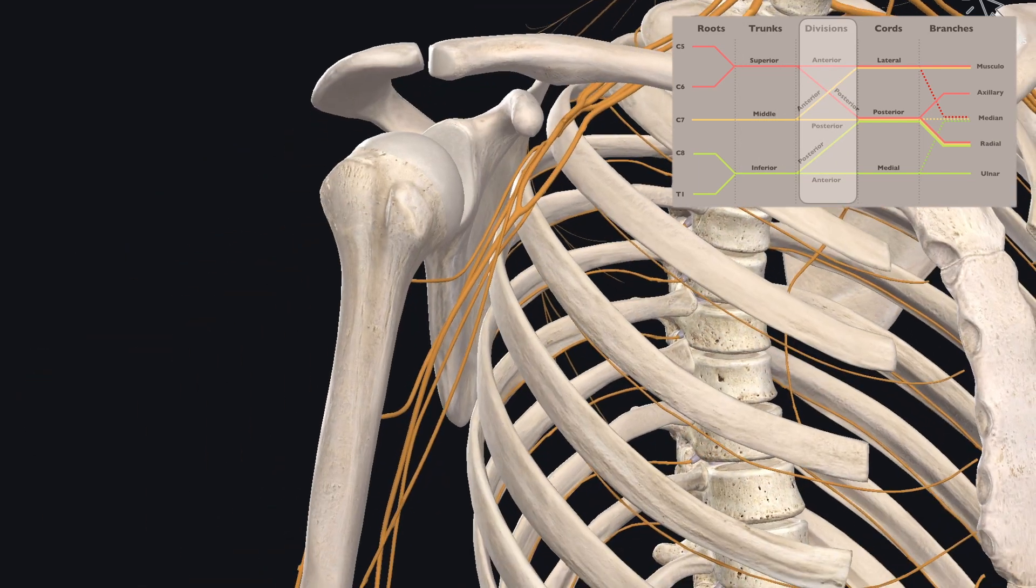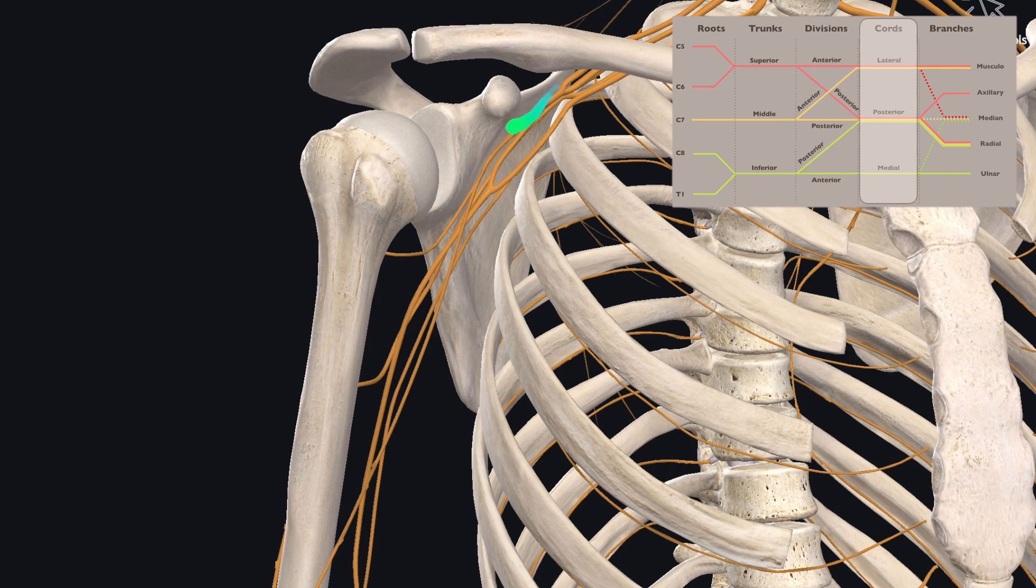The anterior and posterior divisions shortly merge into the three cords. The cords continue for a short distance until about the level of the axilla, where they split into the various branches.